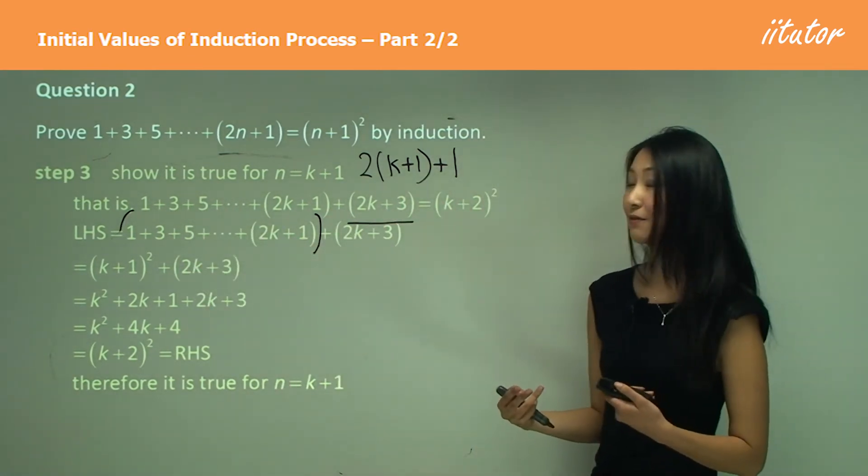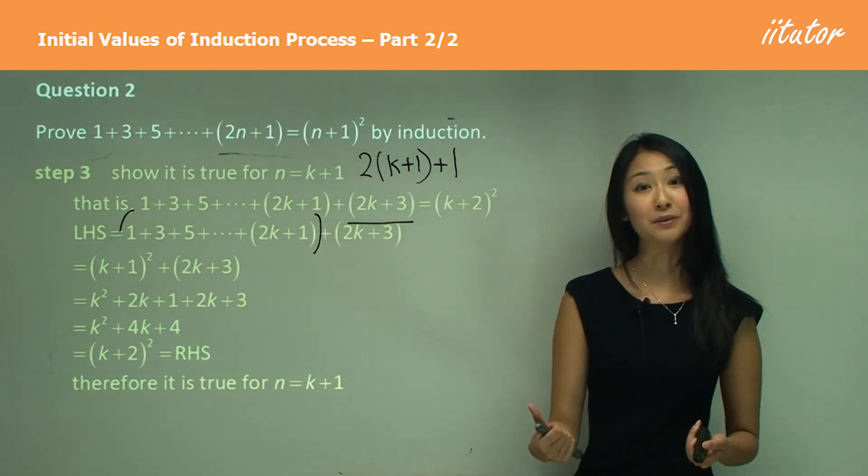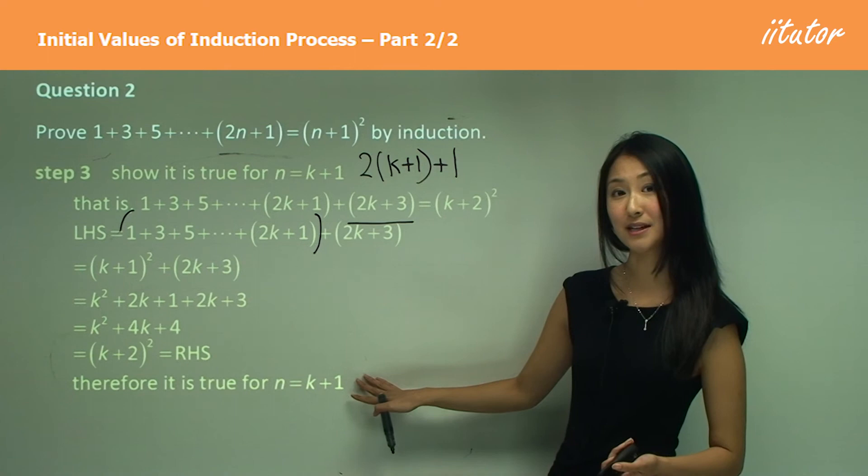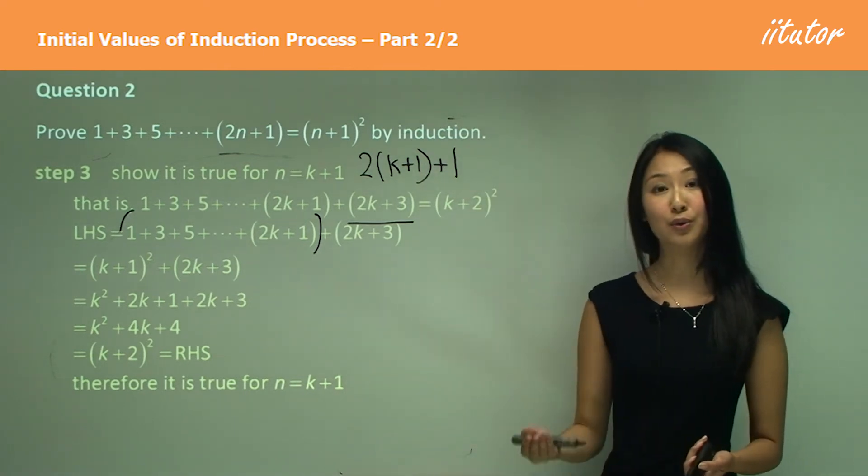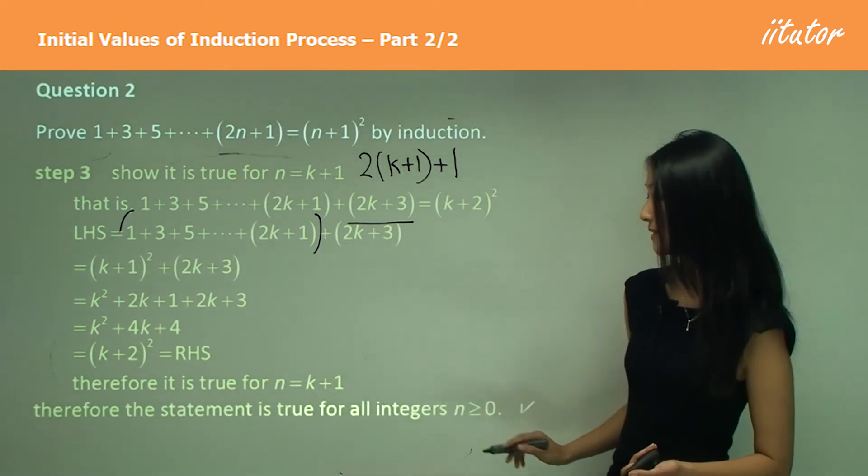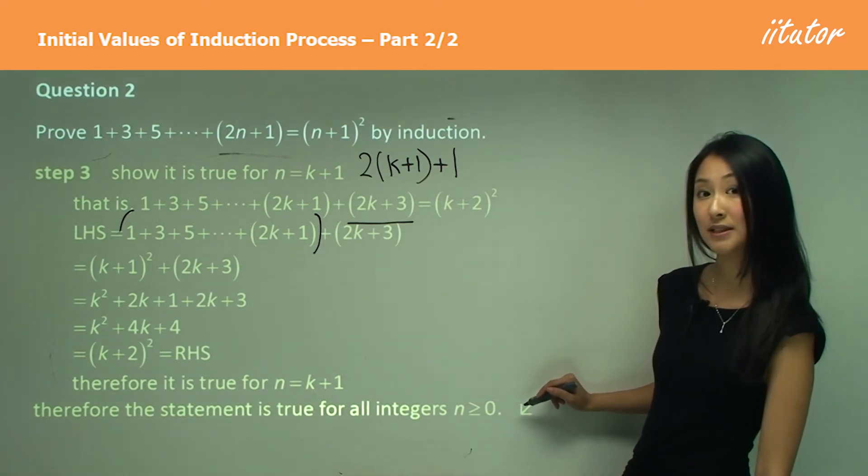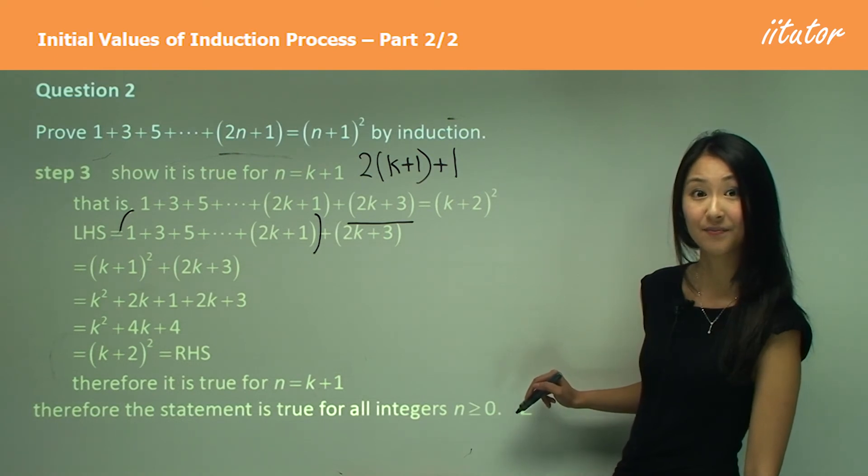And that means if we've proven it's true for n equals to one, and now we've proven it's true for n equals to k plus one, we make our concluding statement. Therefore, the statement is true for all integers of n is equal to zero or greater than zero.